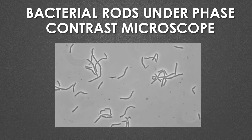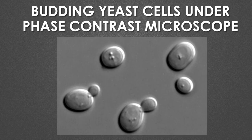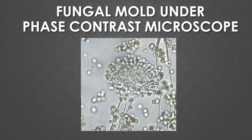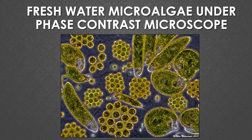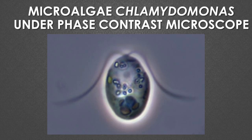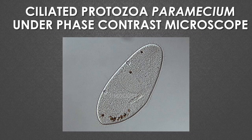This figure shows bacterial rods under the phase contrast microscope. This image shows budding yeast cells under the phase contrast microscope. This image shows the fungal mold Aspergillus species under the phase contrast microscope. This image shows freshwater microalgae under the phase contrast microscope. This figure shows the microalgae Chlamydomonas under the phase contrast microscope, and this shows the ciliated protozoa Paramecium species under the phase contrast microscope.